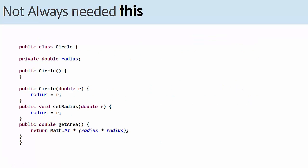Do we always need the this keyword? No. In this example it's not needed, simply because there is no confusion. The parameters of the methods and the constructors here have different names from the instance variable radius. This is a circle class with one default constructor, another constructor that takes radius as a parameter. The name here in the constructor is r. The instance variable is radius. So no confusion at all.